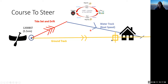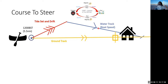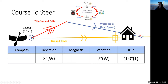That crossing point gives us our water track — our course to steer. We put the plotter on the chart and measure the angle of that water track. Because it's drawn on the chart it will be in true. In this example, if we start with 100 degrees true, we apply variation — going from true round to compass we subtract east or add west. So applying 7 degrees west variation gives 107 degrees magnetic. Then applying deviation gives us our compass heading of 110 degrees compass.